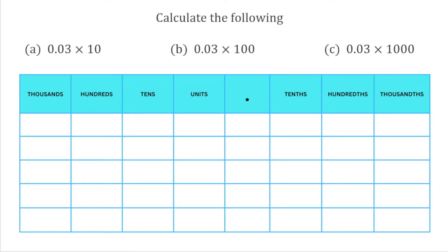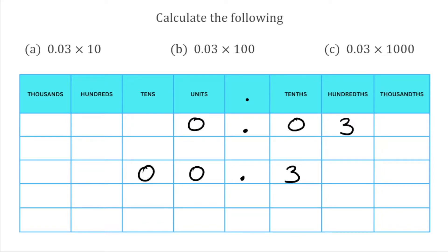For this next set of questions we've got 0.03. I'm going to write that in: 0 in the units, our decimal point, then 0 in the tenths and 3 in the hundredths. For the first question we've got 0.03 multiplied by 10, which means we're going to move all the digits one space to the left. The 0 in the units moves to the tens, the 0 in the tenths moves to the units, and the 3 in the hundredths moves to the tenths. So our answer to 0.03 multiplied by 10 is 0.3.